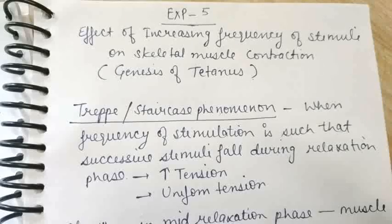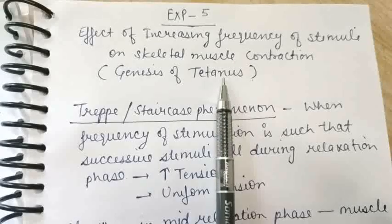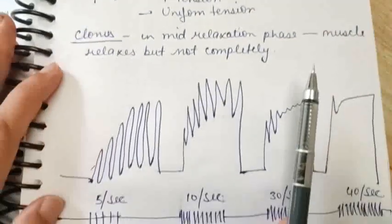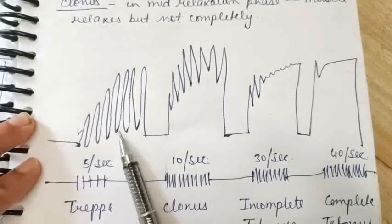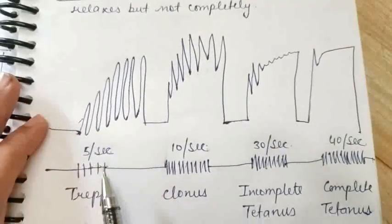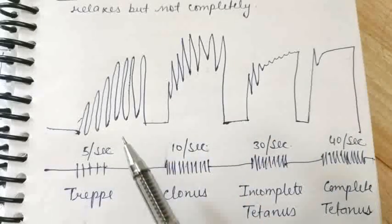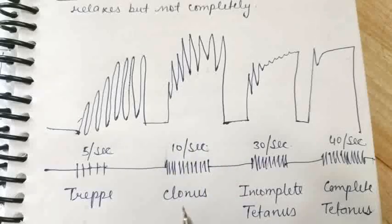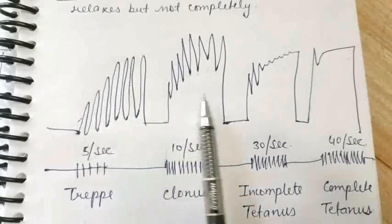If we give many stimulations, say 5 to 40 per second, what is going to happen? We'll be talking about that. This experiment is called genesis of tetanus — we'll discuss why later. This is the graph which you can get in muscle physiology. You can see there are stimulus markers below and graphs which are visible. We'll always talk about the observation part first — you can see there are four segments which we'll talk about separately.